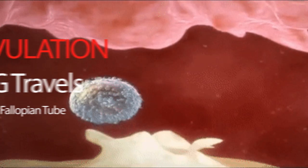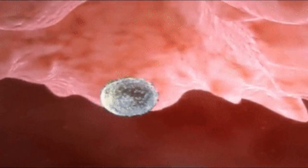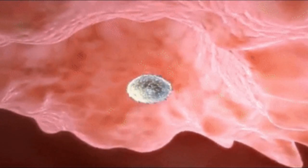The egg is released from the ovary and it travels in the fallopian tube. In the fallopian tube, the sperm and egg will finally meet.